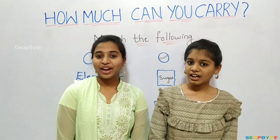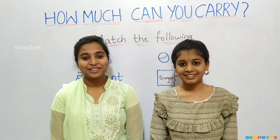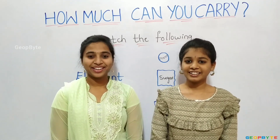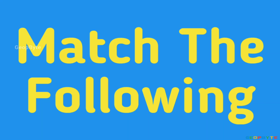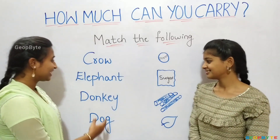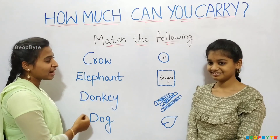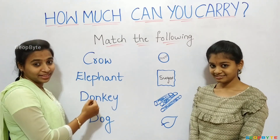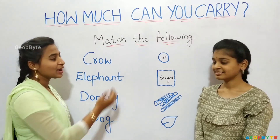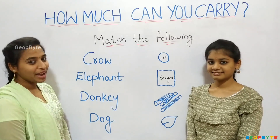Now, let us get into the topic: Match the following. Hey kids, see here. I have animals on this side and the things which they carry on this side. Now, let us match them.